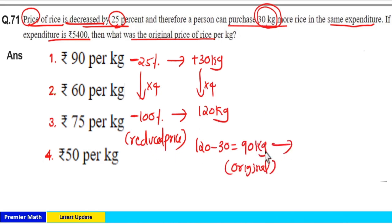So this 90 kg costs Rs. 5400. 90 into 60 is Rs. 5400, means 1 kg costs Rs. 60. Option 2 is your answer. You can also do this in ratio method.